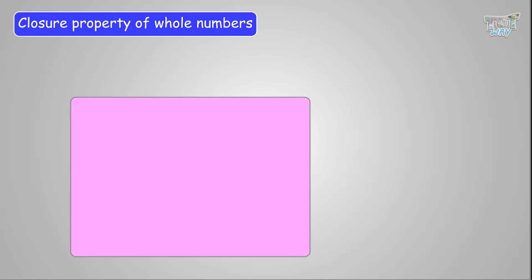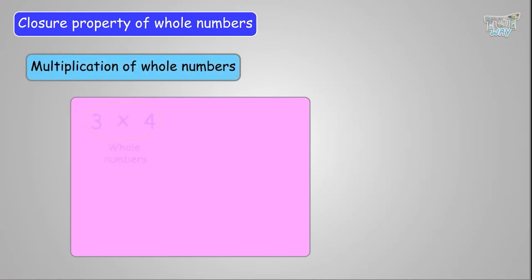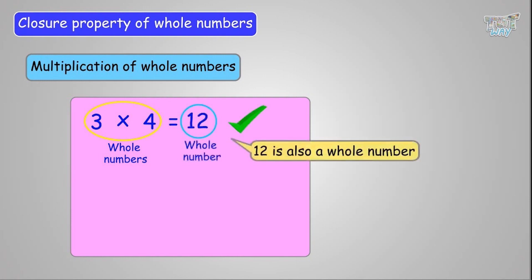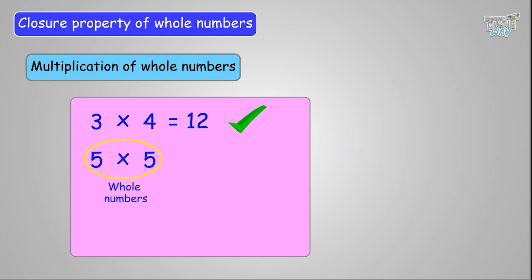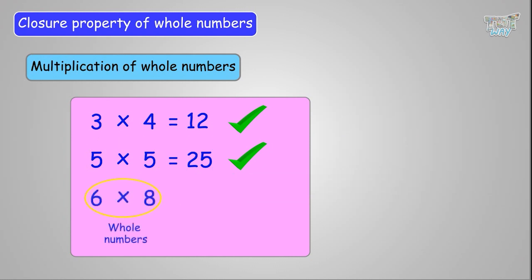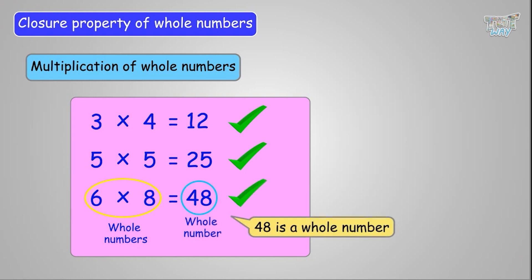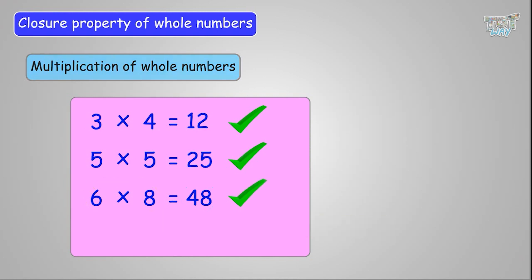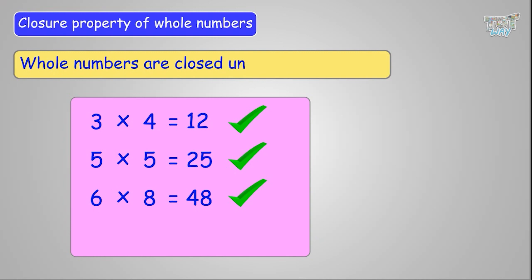Now let's learn about multiplication. Take two whole numbers and multiply them: 3 times 4 is 12, which is a whole number. 5 times 5 is 25 — a whole number. 6 times 8 is 48 — also a whole number. So we can say that whole numbers are closed under multiplication.